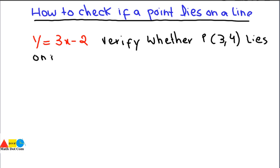How can you check that? The simplest method is to put the values: 3 equals x and 4 equals y, since in an ordered pair the first value represents x (the abscissa) and the second value represents y (the ordinate). We have to put these values into the equation.